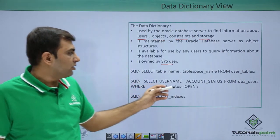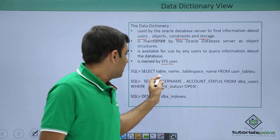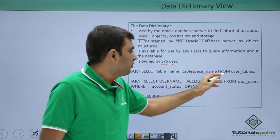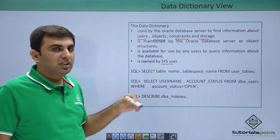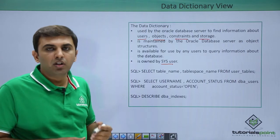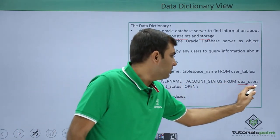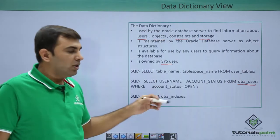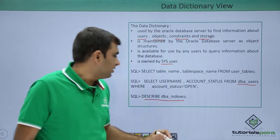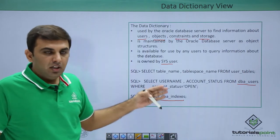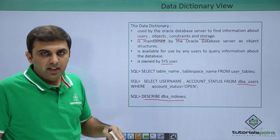For example, if you want to see how many tables exist, you can execute: SELECT table_name, tablespace_name FROM user_tables. If you want to see how many users we have and their status — whether open, locked, or expired — you can check dba_users. You can also describe a data dictionary view using DESCRIBE dba_indexes, which will display the column names and their data types.